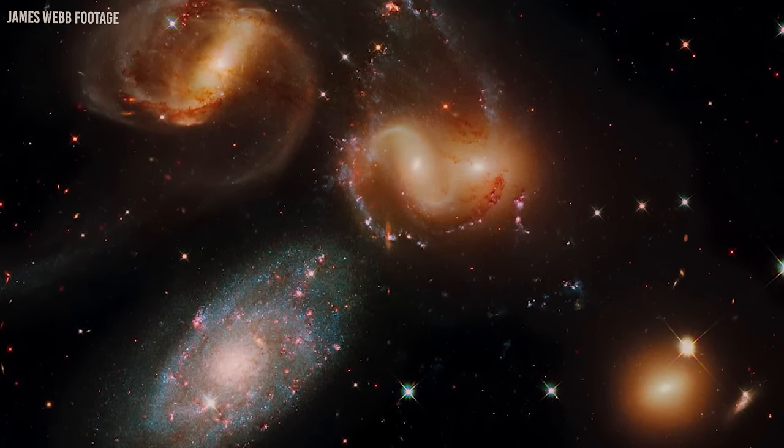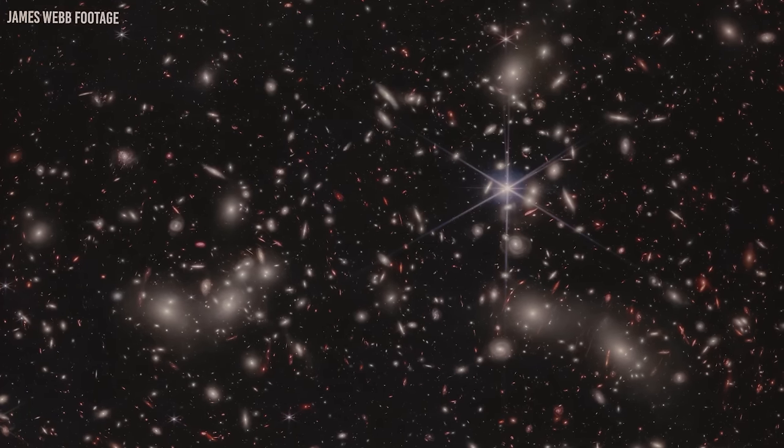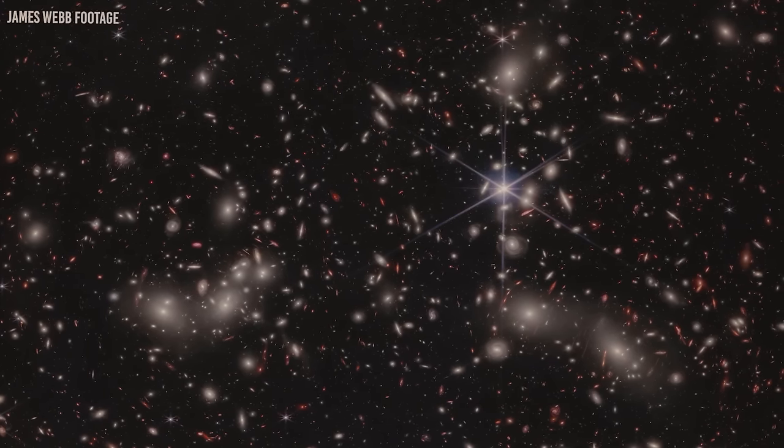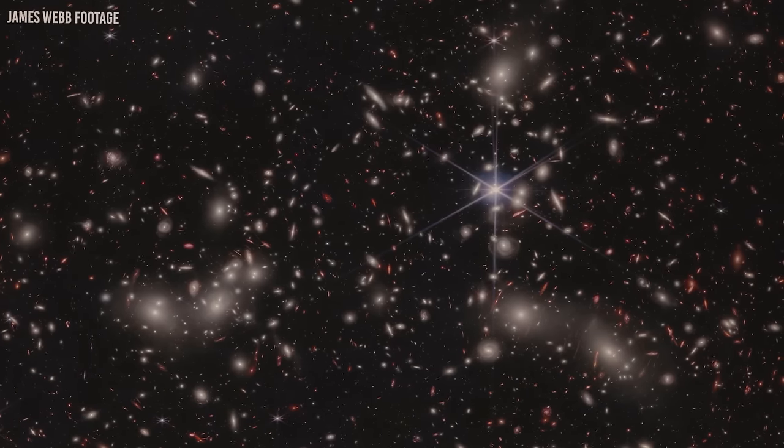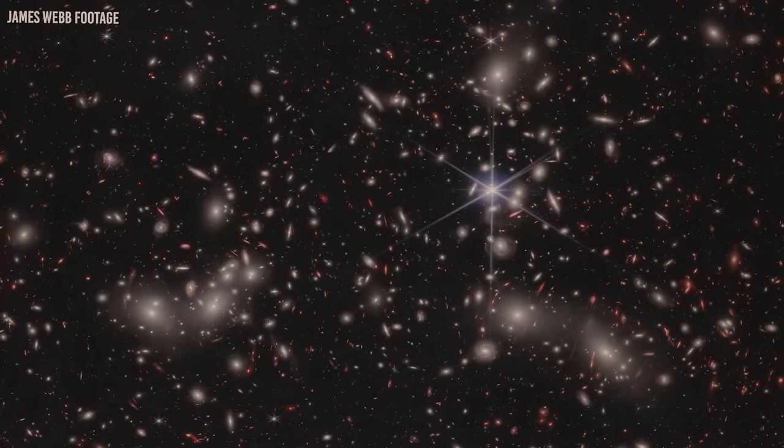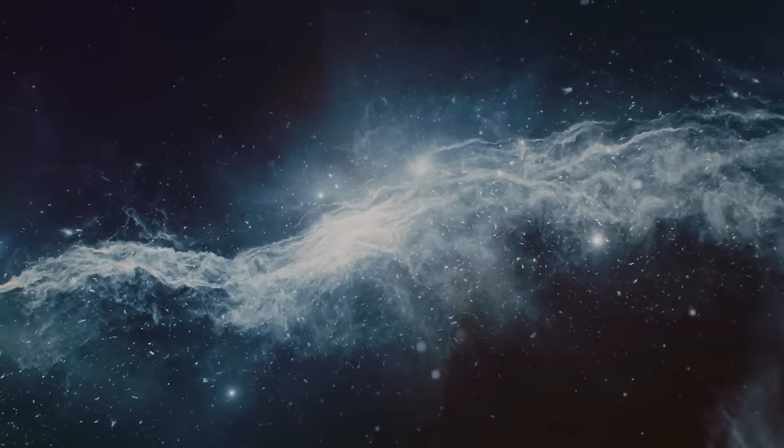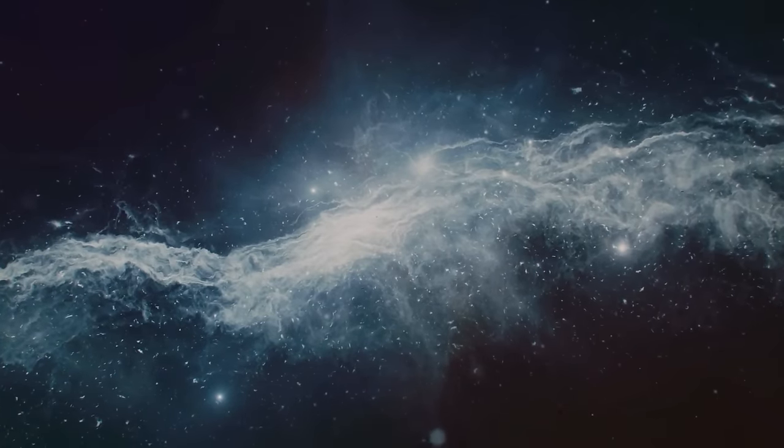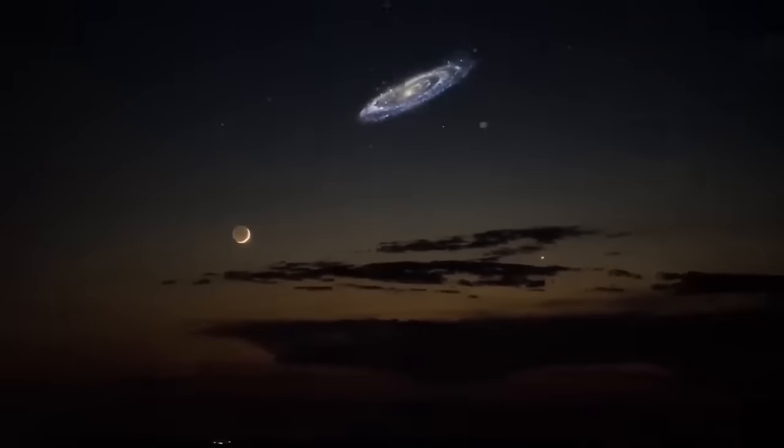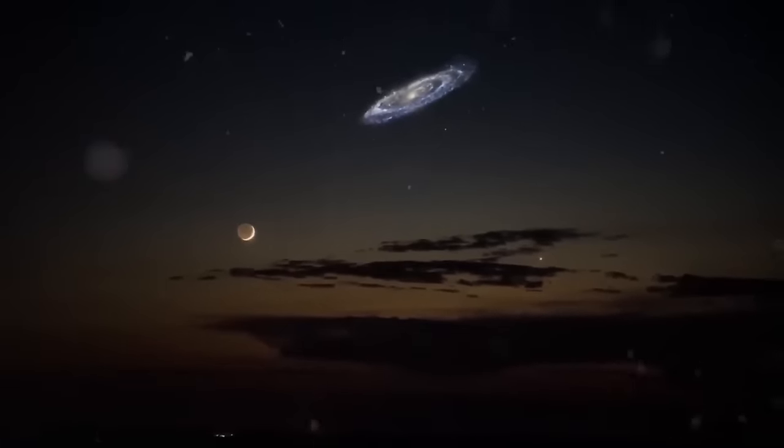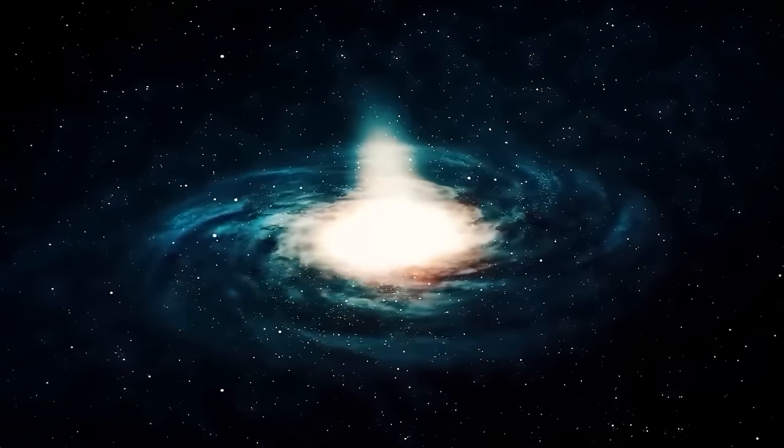Alcyoneus may reveal new clues about the structure of our universe, also known as the cosmic web, which is believed to connect all galaxies. This complex network is composed of filaments of clustered galaxies separated by enormous voids. The intergalactic medium between galaxies may play a role in shaping the galaxy's enormous plasma plumes. Therefore, the researchers plan to further investigate Alcyoneus' environment to see if anything in its surroundings can explain its peculiar growth.